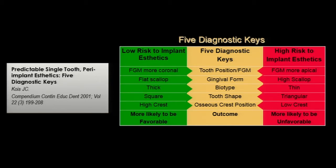We can have things that are more favorable and other things that are more likely to be unfavorable — this is high risk, this is low risk. We want low risk. So if we have a tooth and we're hoping this is going to be our accreditation case, this is what we want.